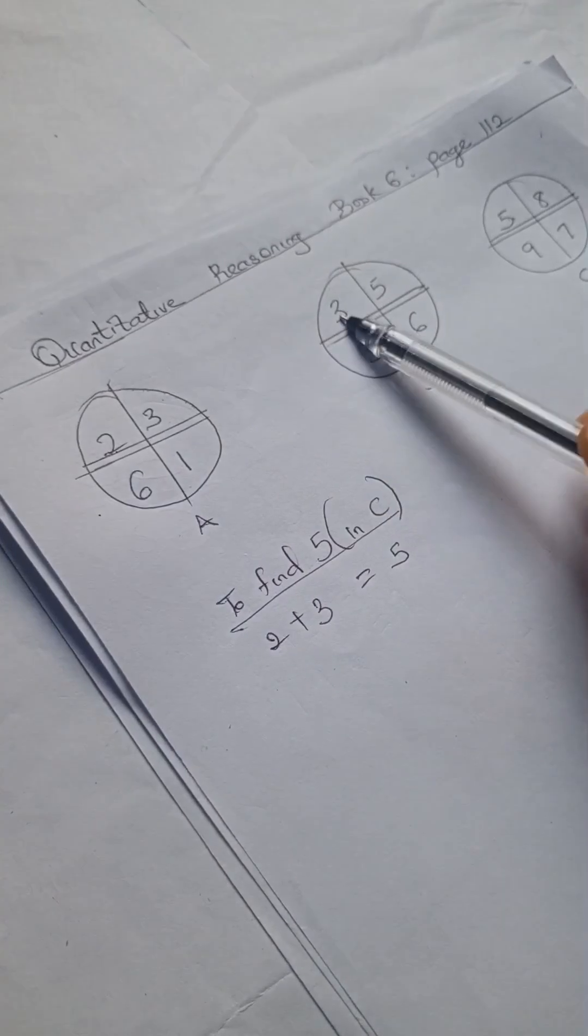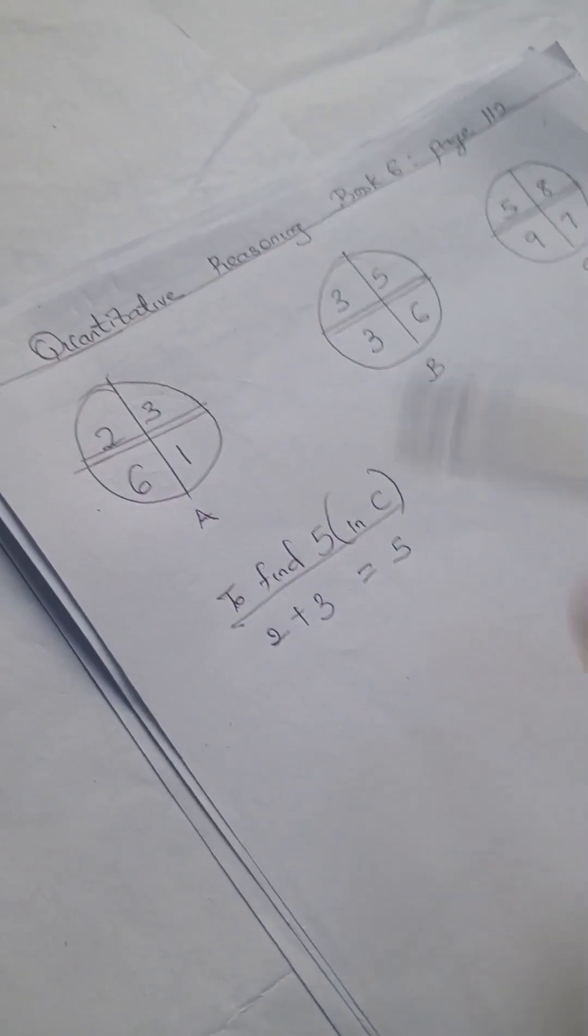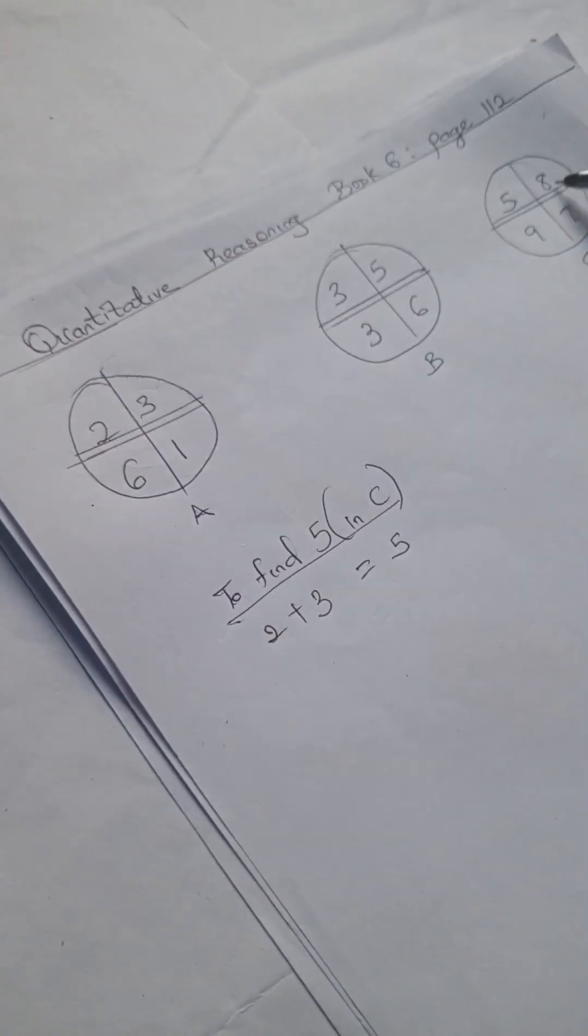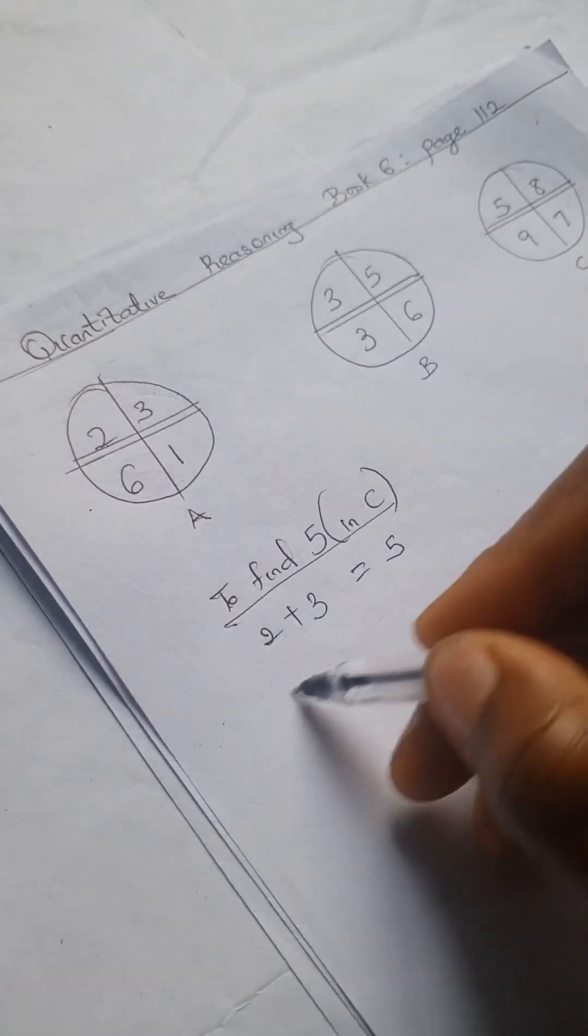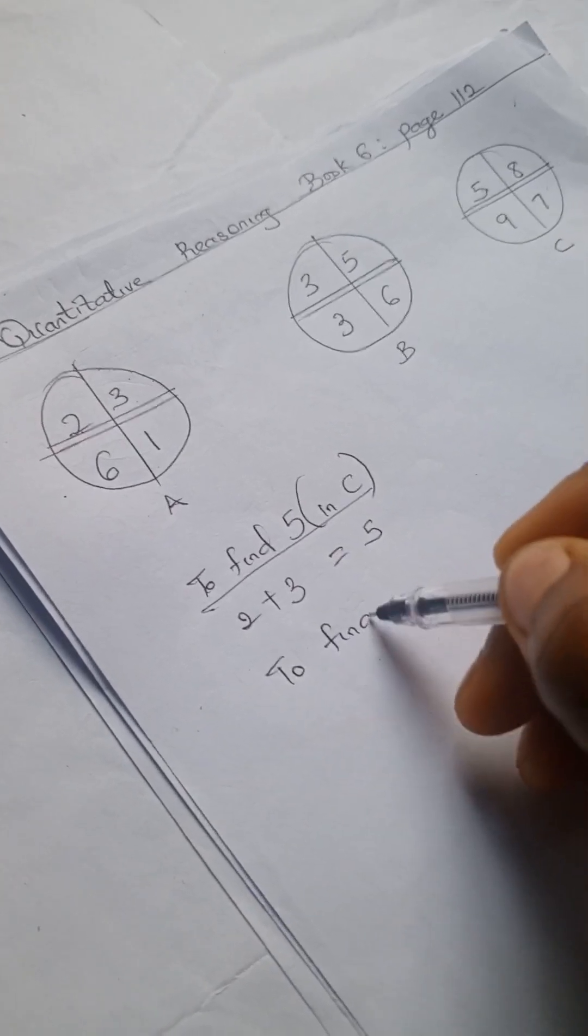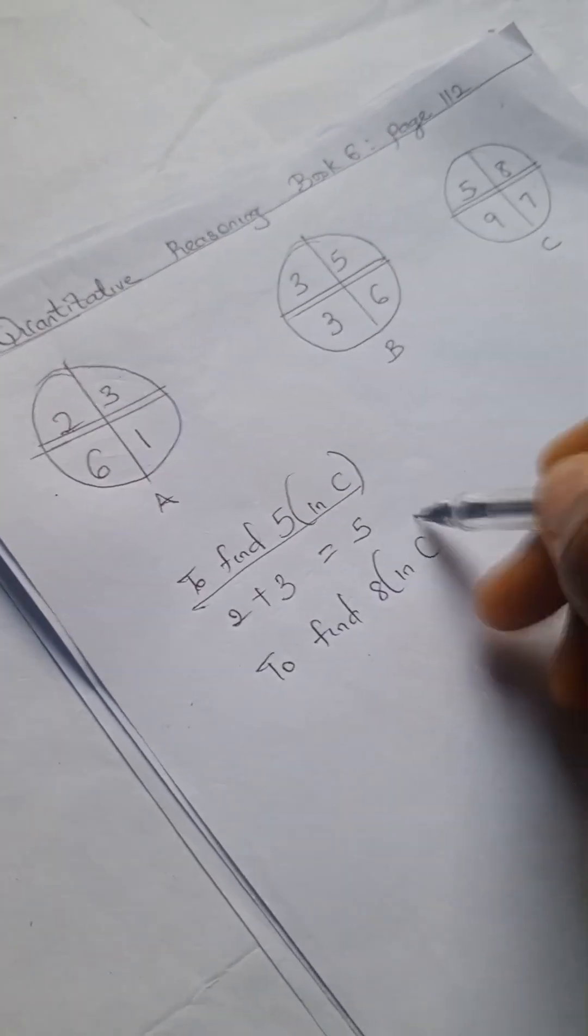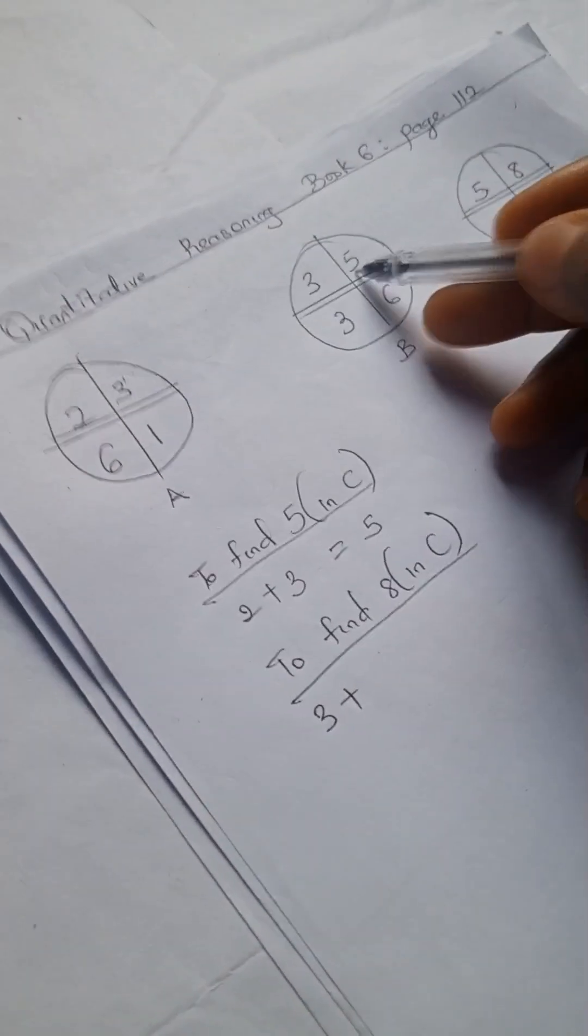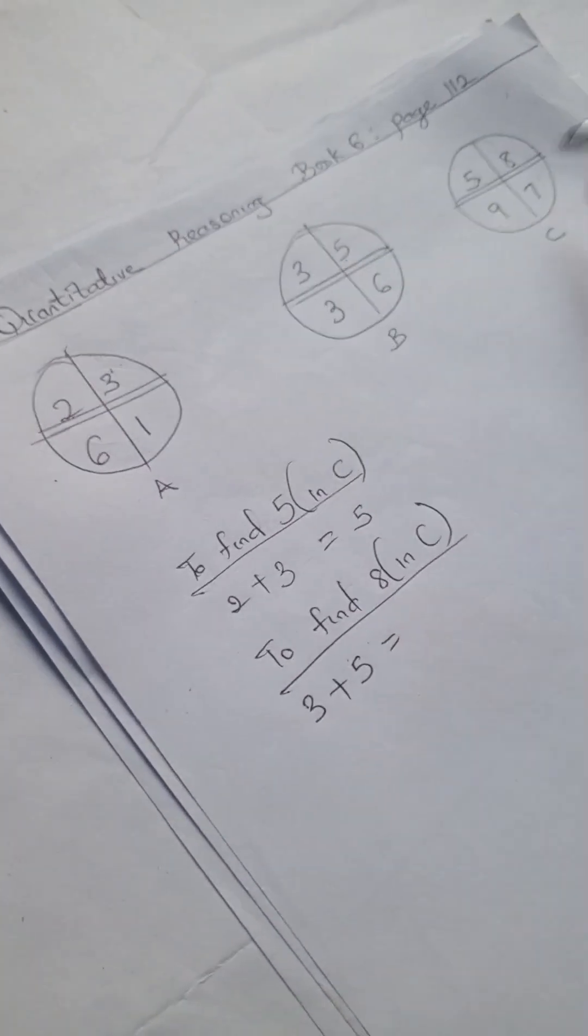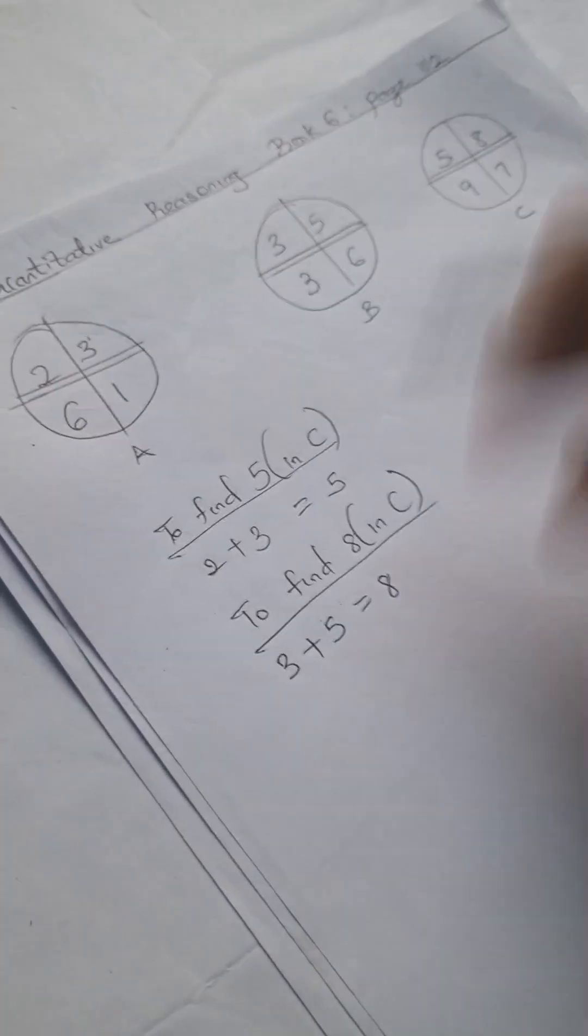Okay, so let's try to find this 8 here. So to find 8 in C, you have 3 plus 5 equals 8.